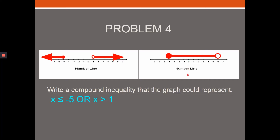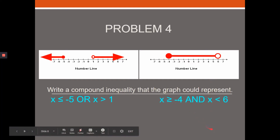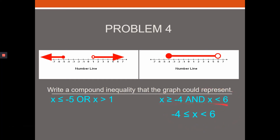For an AND statement from a number line: shading in between means x greater than or equal to negative four AND x less than six. You can also write it in concise notation with x in the middle, going least to greatest: negative four less than or equal to x less than six. Both inequality signs must face the same direction and mean the same thing.